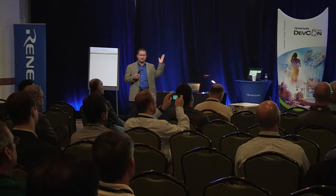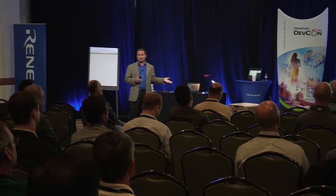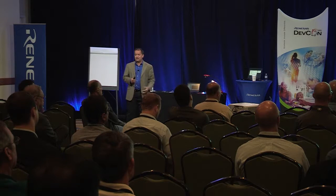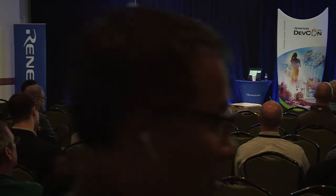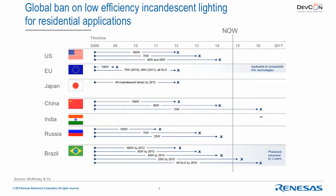The biggest driver behind LED lighting has been regulations, which came about because of energy efficiency requirements. Pretty much every country in the world said they don't want to use low-efficiency lighting anymore — no incandescent, no halogen — for both residential and commercial. In most countries on the list, you cannot buy an incandescent light over 40 watts. They're pushing for more and more energy efficiency, and the best way to address that is to go towards LED lighting.